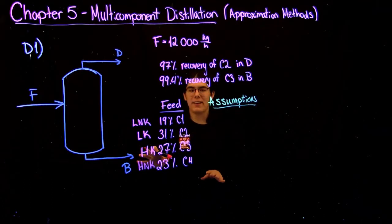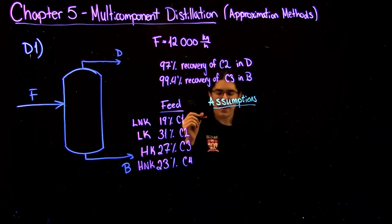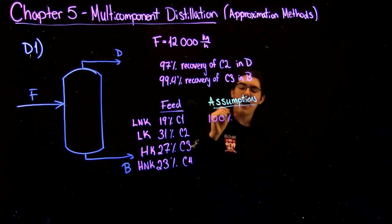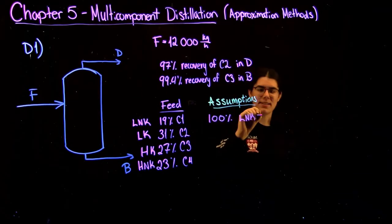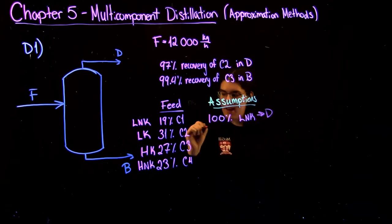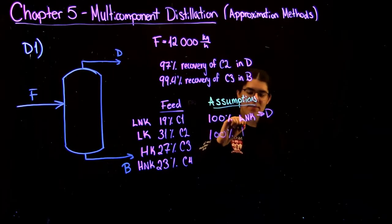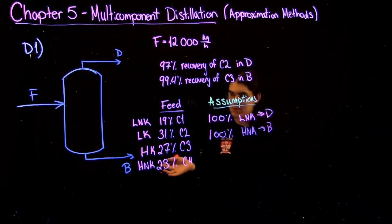Now that we've identified the components, we can make the main assumptions that will help us solve this problem, and those assumptions are that 100% of the light non-key is going to come out of the distillate, and the same thing for the heavy non-key. Our assumption is that 100% of the heavy non-key is going to come out of the bottoms.